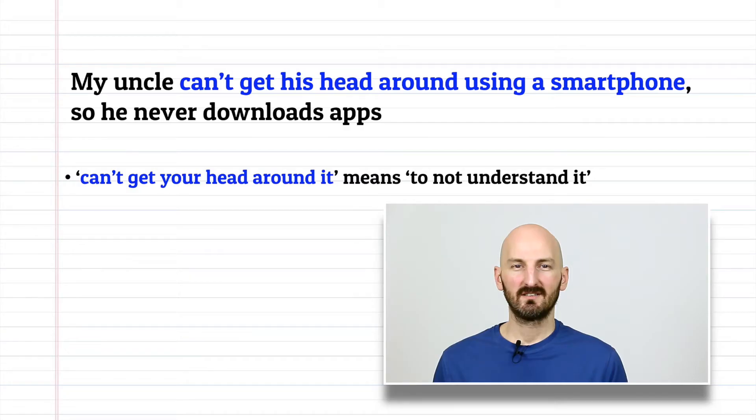Next, he can't get his head around it. This is a simple expression that means, to not understand. It's used for something you find complex or detailed. You can change the pronouns. An example in context is, my uncle can't get his head around using a smartphone, so he never downloads apps.